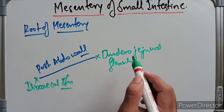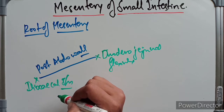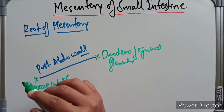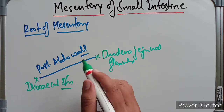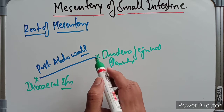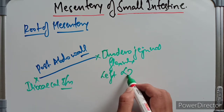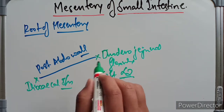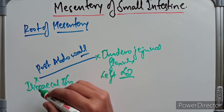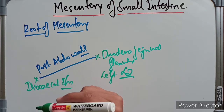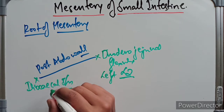The duodenojejunal flexure lies approximately to the left of the L2 vertebra, whereas the ileocecal junction lies at the upper part of the right sacroiliac joint.